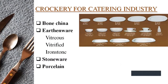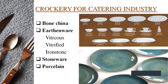Next, for the catering industry, we have the varieties of crockery available in five-star hotels, which are made from bone china, earthenware, stoneware, and porcelain. In earthenware, we have another category called vitrified ironstone, which is the strongest earthenware crockery. In the next picture, you can see the picture of stoneware crockery also. This is all about the crockery which is used in the catering industry.